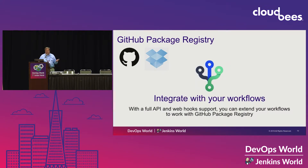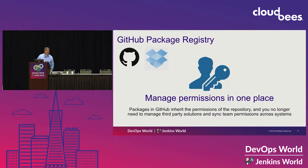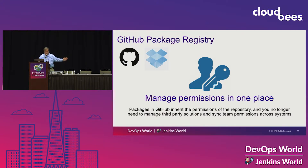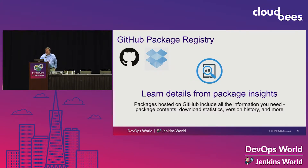Integrate with your workflows — if you have Jenkins pipelines, Blue Ocean, whatever you're using, you're able to integrate through the Actions framework. Manage permissions in one place. A lot of organizations have a separation of responsibility between operations and development teams, so you will have varied permissions on who can edit the YAML files that define Kubernetes cloud infrastructure versus who can change application source code. Learn details from package insights — the increased visibility and dashboard showing how many people are pulling down packages and what's going on with your overall build pipeline.